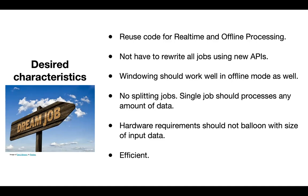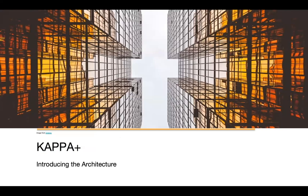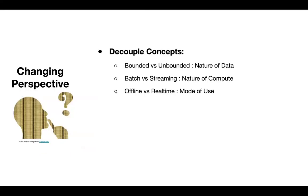So how would we like things to be? The dream job would run both in real-time and offline, reusing the same code without rewriting using yet another set of APIs. Windowing should work well regardless of execution mode. You shouldn't have to split jobs and coordinate them. Hardware requirements should not balloon with input data size. And of course, it has to be efficient. In summary, we want it all — and we want it for free. This is our attempt at tackling that problem: Kappa+.